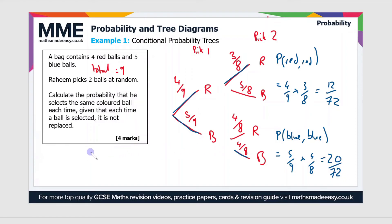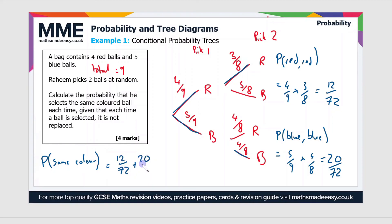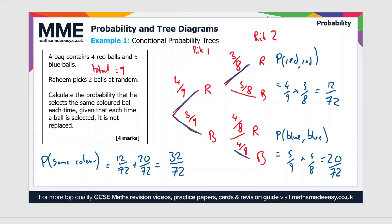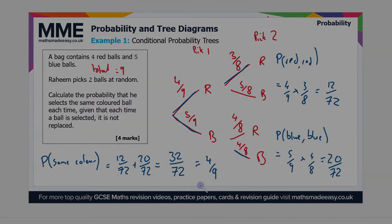We just have to use the OR rule to add the probabilities together. So P(same colour) — the probability that the ball is the same colour each time — is equal to 12 over 72 plus 20 over 72, which is 32 over 72. If you want, you can cancel that fraction down and you should get a value of four ninths.